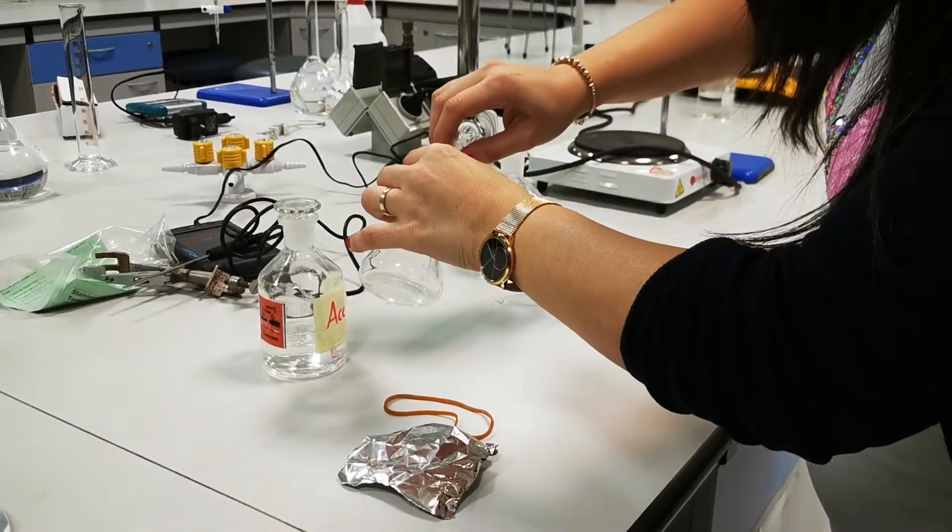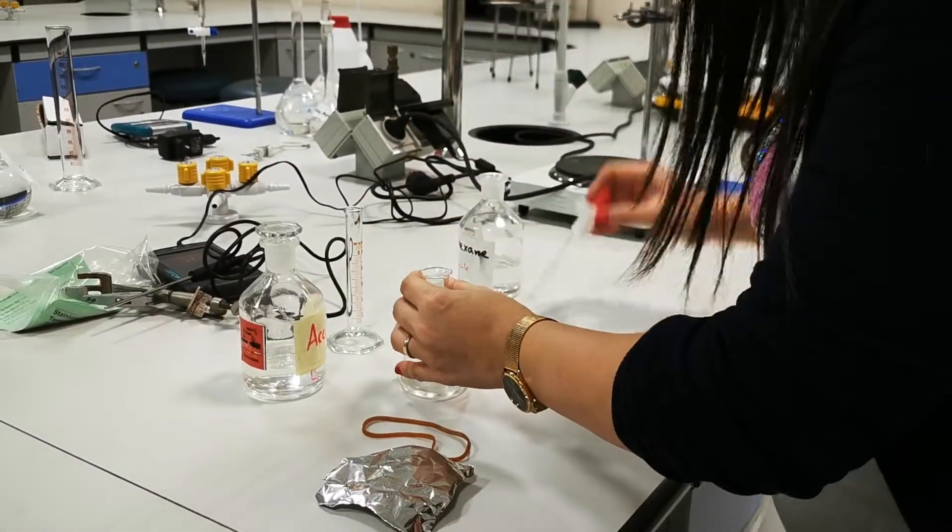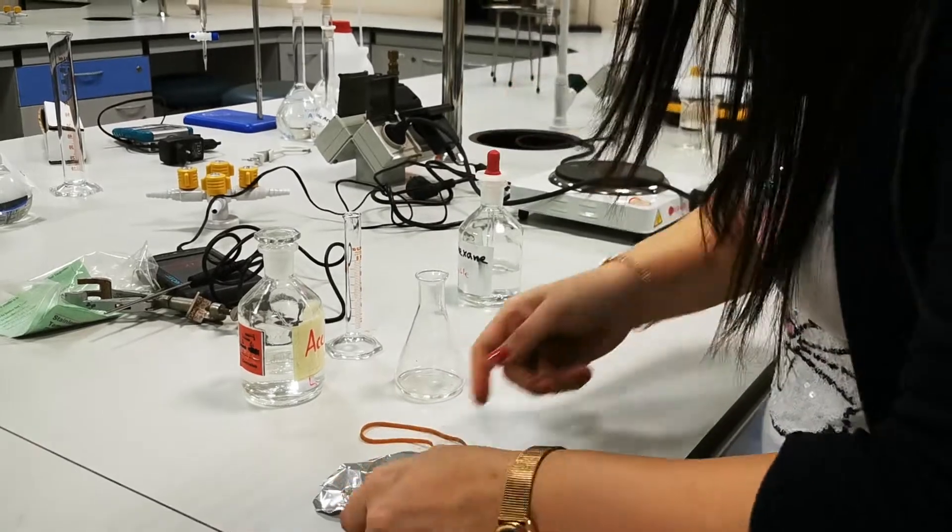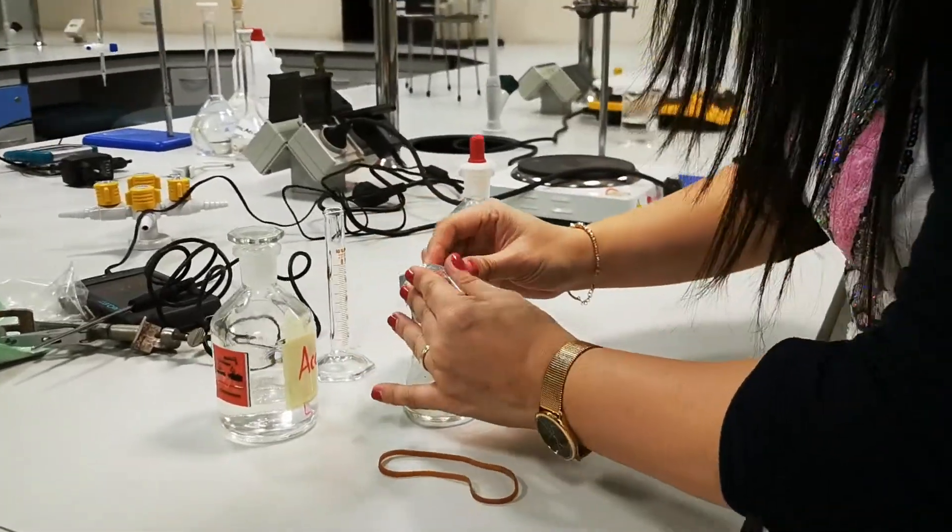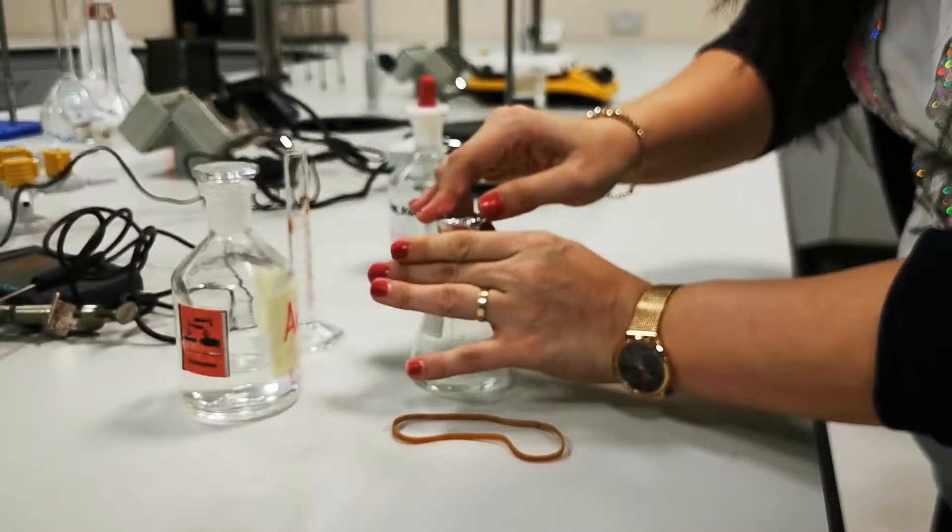I'll put it in the Erlenmeyer flask, and I will cover it with the aluminum foil, the one I measured the mass, and the rubber band.